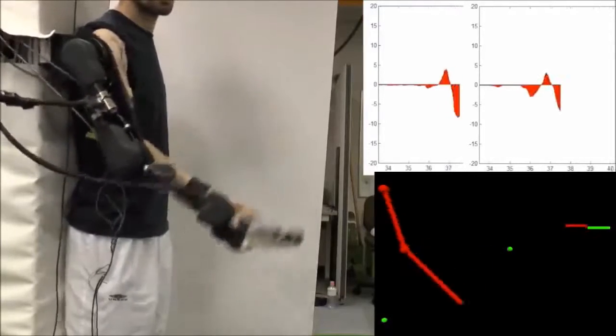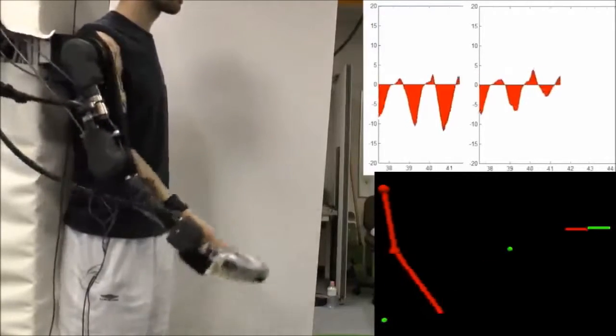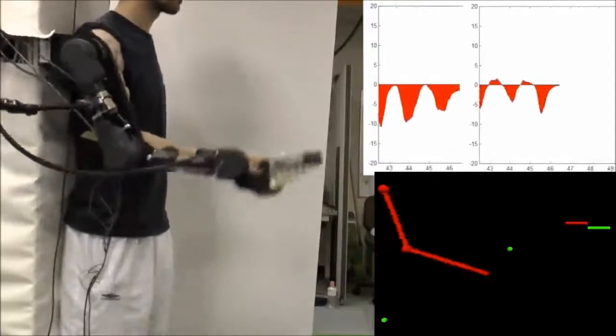To begin with, the subject initiated the desired motion by activating the appropriate muscles. The exoskeleton quickly adapted to the motion and minimized the subject's muscle activity.